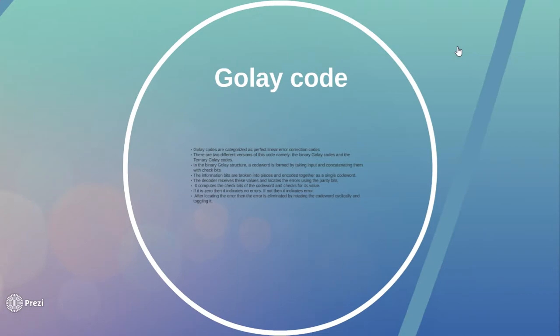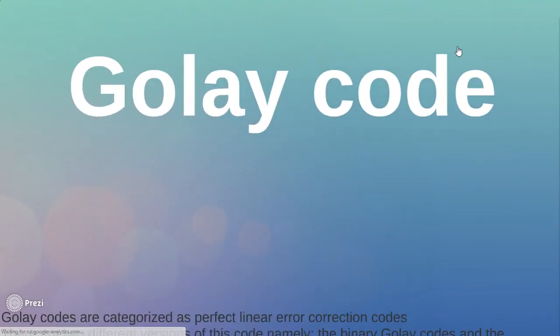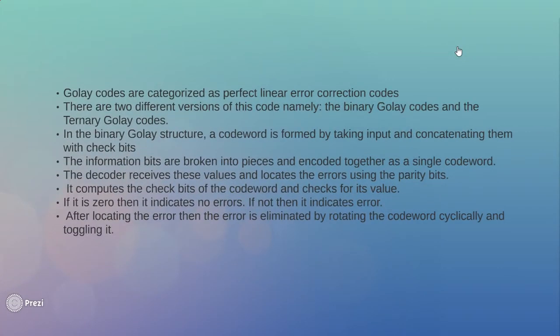Now moving on to Golay codes. Golay codes are similar to the Hamming codes. Golay codes are characterized as perfect linear error correcting codes. There are two different versions of this code namely the binary Golay codes and the ternary Golay codes.